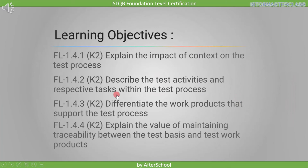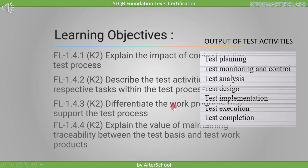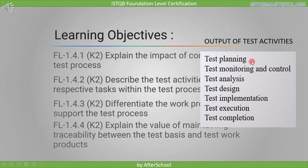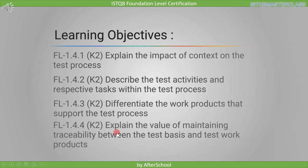The third topic is: Differentiate the work products that support the test process. We have seven common test activities, and after each test activity, we will get an output, which is referred to as a work product. In this topic, we need to remember which work product belongs to which activity.